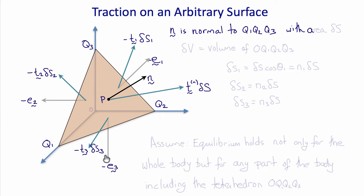So again, n is the unit normal to q1, q2, q3. Delta v is the volume of the tetrahedron O, q1, q2, q3. Delta s is the area of q1, q2, q3. And delta s1, delta s2, and delta s3 are the areas of these individual faces.